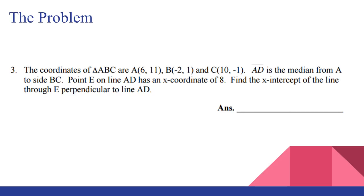Find D, because D is the midpoint of B and C. Find AD, because we need AD to find E. So that's the third step, find E from AD. And the fourth step would be find the x-intercept of this new line.